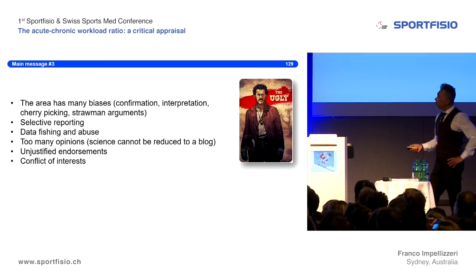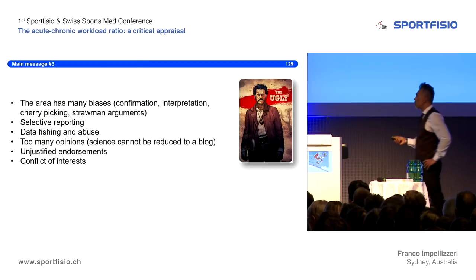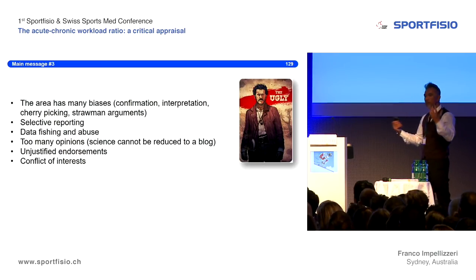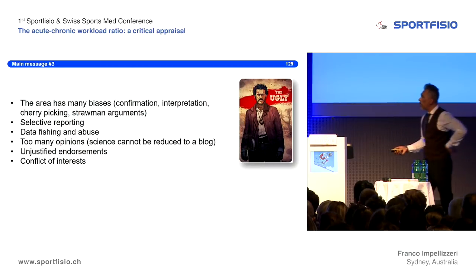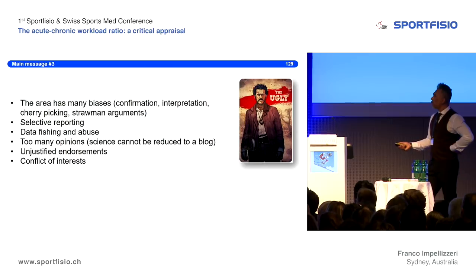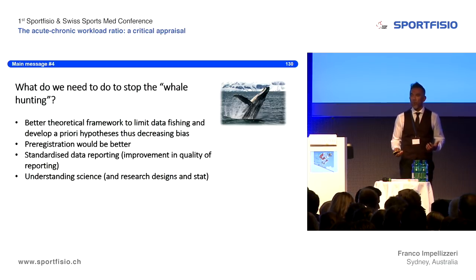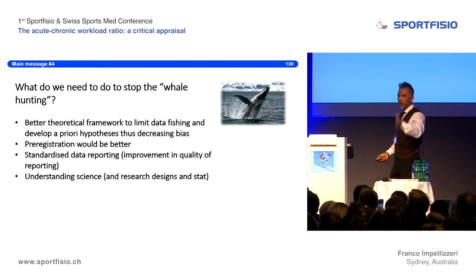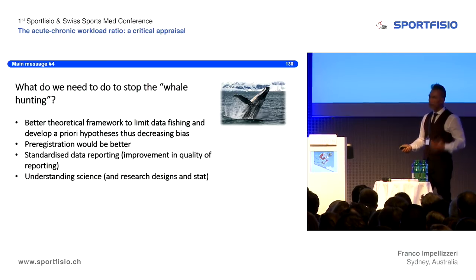This area has a lot of bias overall — confirmation bias, interpretation bias, cherry-picking, selective reporting, risk of data fishing, too many opinion pieces, unjustified endorsements, and sometimes conflicts of interest. These are problems across the field, not just in any one person's work. For future progress, we need a better theoretical framework, we should pre-register studies stating in advance which parameters and reference categories we'll use, report results more clearly so methods are understandable, and explore better research designs.